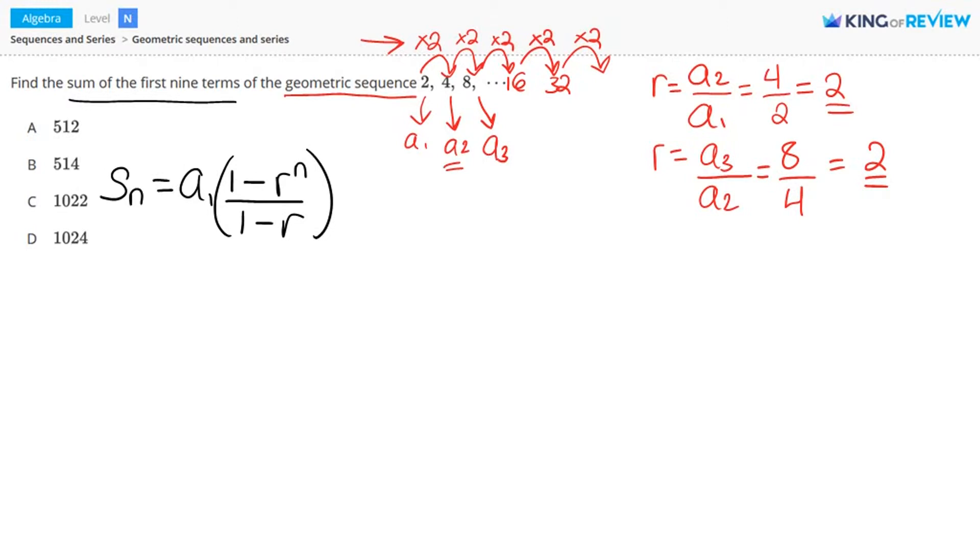And this formula is Sn equals a1 times 1 minus r to the n power divided by 1 minus r. r is the common ratio. The sum, which is Sn here, n is the number of terms. So in this case, we're calculating the sum of the first 9 terms equals the first term. Our first term is a1, which is this number here. So 2 times 1 minus r, r is the common ratio, which is 2. So 2 to the n power, n is the number of terms, so here it's 9, divided by 1 minus 2.